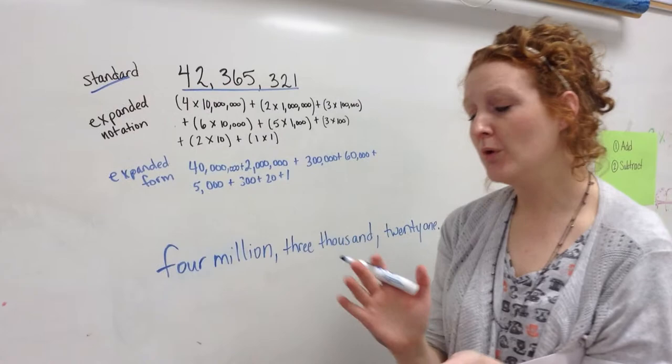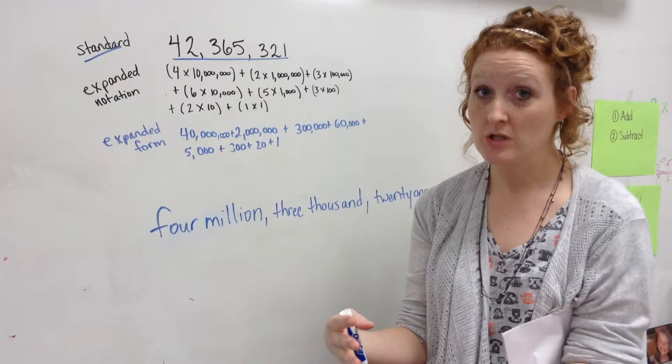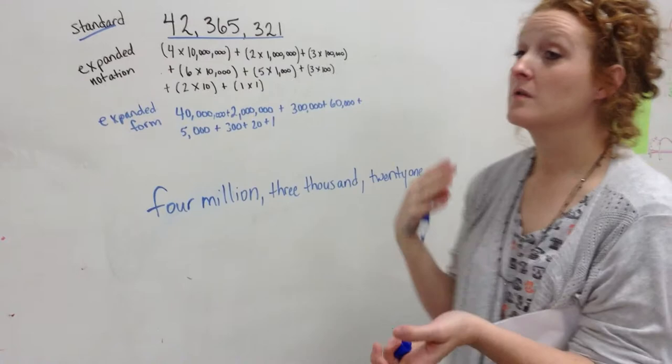Now, one of the things that they're going to have to do is transfer from one representation to another. So a helpful thing to do is having them do digit spaces. I'm going to show an example with this written form: four million, three thousand, twenty-one.